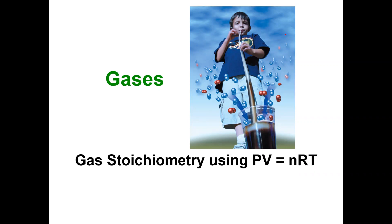So in the earlier video with gas stoichiometry we use STP standard temperature and pressure and molar volume one mole of any gas occupies 22.4 liters to use our stoichiometric calculations in our mole to mole ratios.